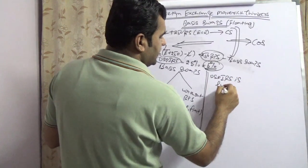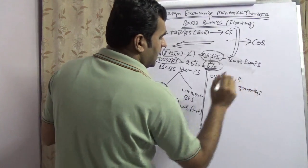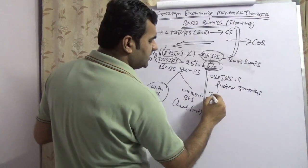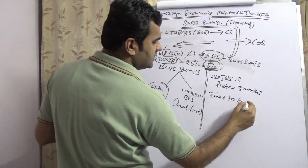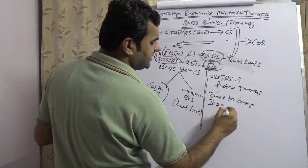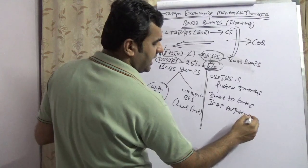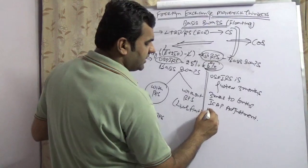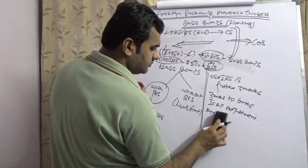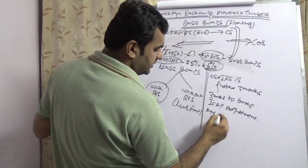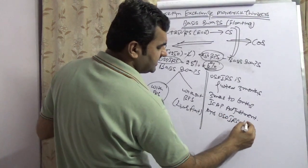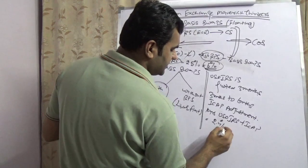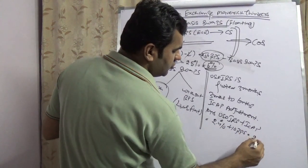The USD IRS is quoted on a 3-month basis, but payments happen annually, so to convert from 3-month to 6-month you need to add an ICAP adjustment. ICAP is the largest broker that provides this adjustment. So it would look like: 10-year USD IRS plus ICAP adjustment. For example, 2.4% plus 10 basis points equals 2.5%.